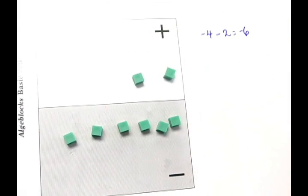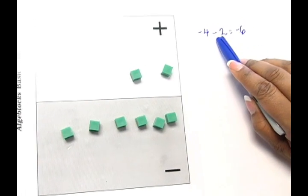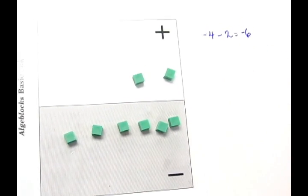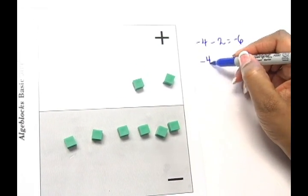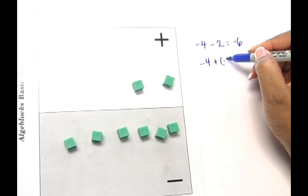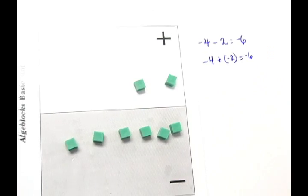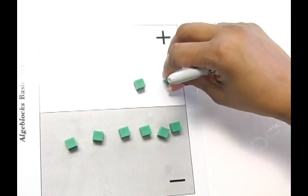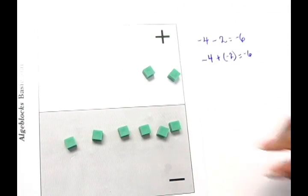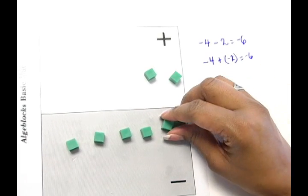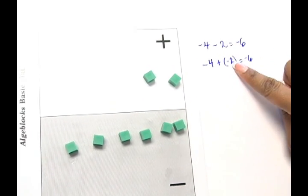This emphasizes for students that when you subtract an integer, what you're basically doing is adding back the opposite. So in order for us to subtract the positive 2, we needed to add on the mat the opposite of positive 2, which is negative 2.